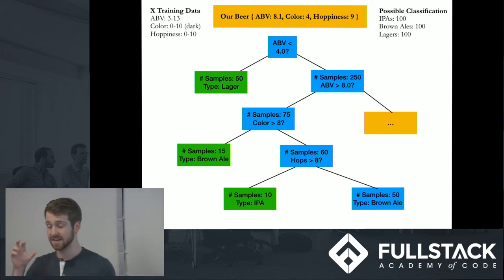Because every single data point in this table that has that feature less than 4 is a type of lager. So we can immediately say it's that. Well, our example isn't that. So let's go to the right. So now we have 250 samples left.